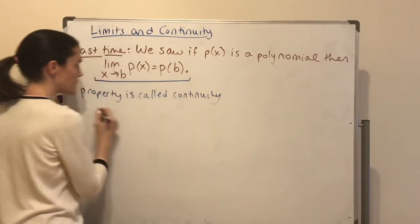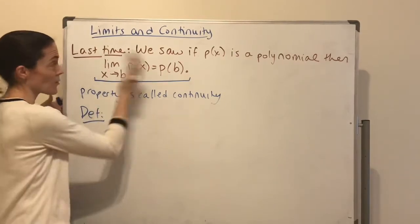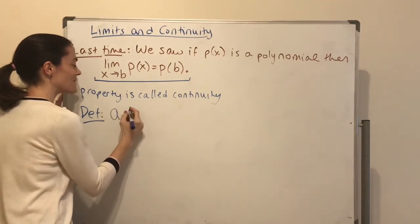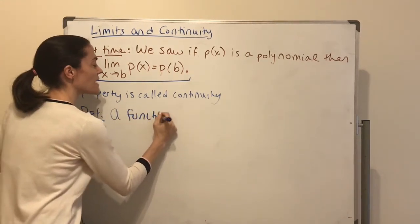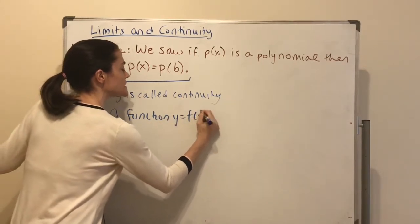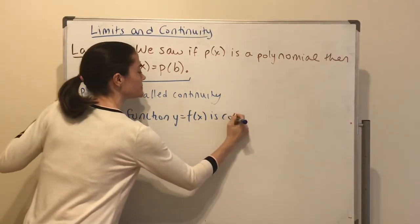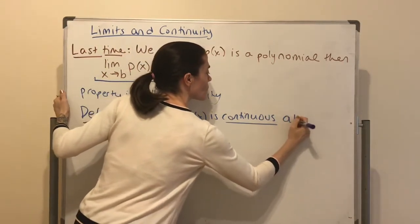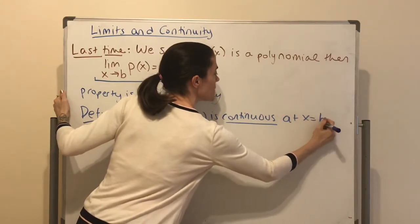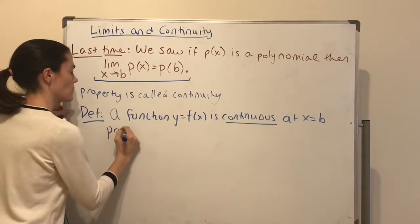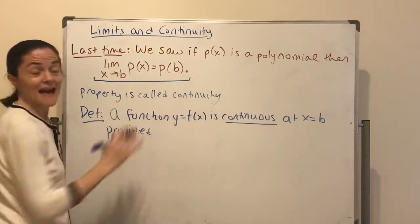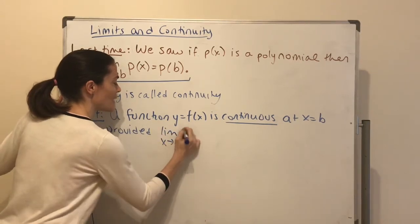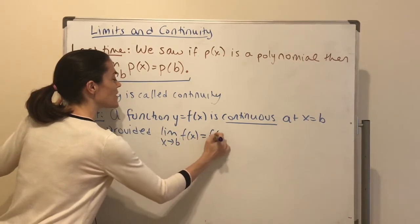Let me give the definition. Although we see it here for polynomials, generally a function F of X is continuous at X equals B, provided exactly this: that the limit as X approaches B of F of X equals F of B.